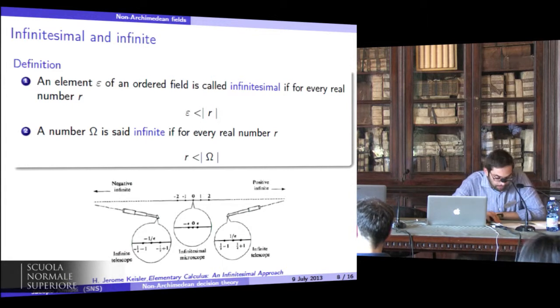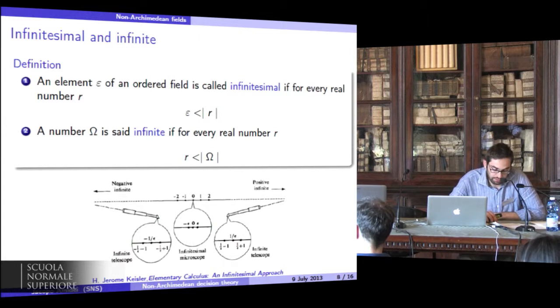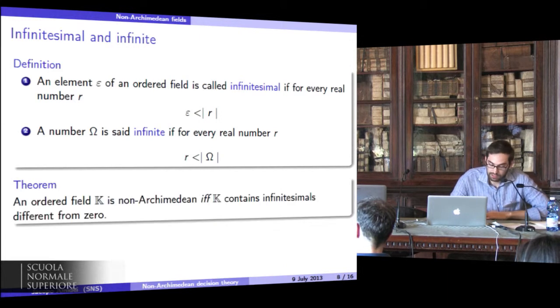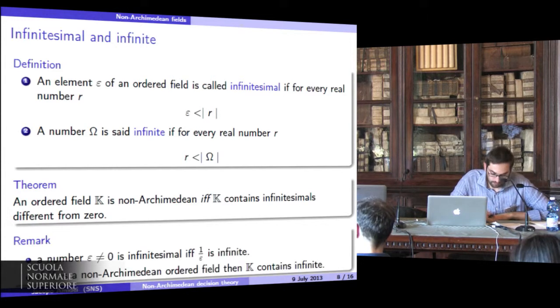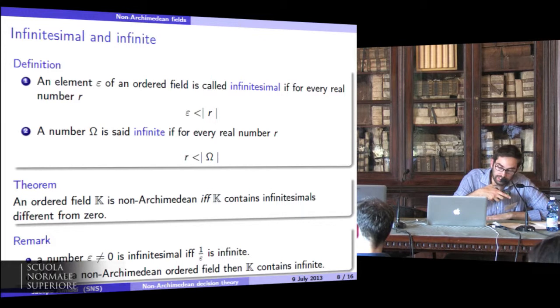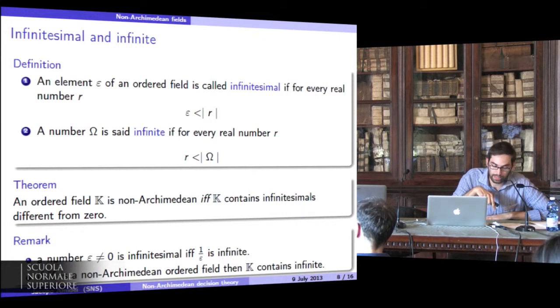So from the definition of non-Archimedean field and the definition of infinitesimal follows this theorem: An ordered field k is non-Archimedean if and only if it contains infinitesimals different from zero. Remark: a number epsilon different from zero is infinitesimal if and only if its inverse is infinite.